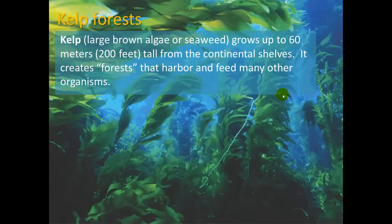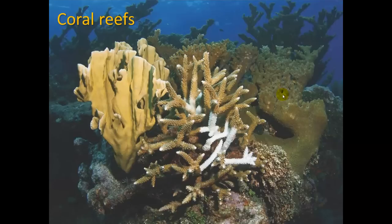Kelp forests: kelp is large brown algae or seaweed that grows up to 60 meters (200 feet) tall from the continental shelves. It creates forests that harbor and feed many other organisms — good habitat for sea otters, sea urchins, crabs, and other life.